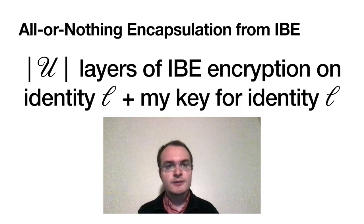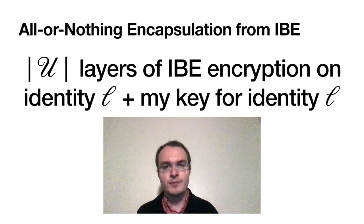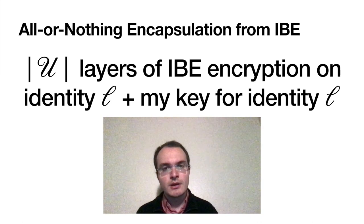Now, here's a simple idea for constructing AONE. Everyone generates an identity-based encryption key pair and advertises the public key. When you want to encapsulate data, you encrypt it under as many layers of IBE as there are participants. Each layer is under a different participant's public key, and under identity L. Finally, you also include your functional key for identity L. And that's pretty much it. Once everyone has done that, you have all the keys for identity L, so you can remove all the layers of IBE and get back all the plaintexts.